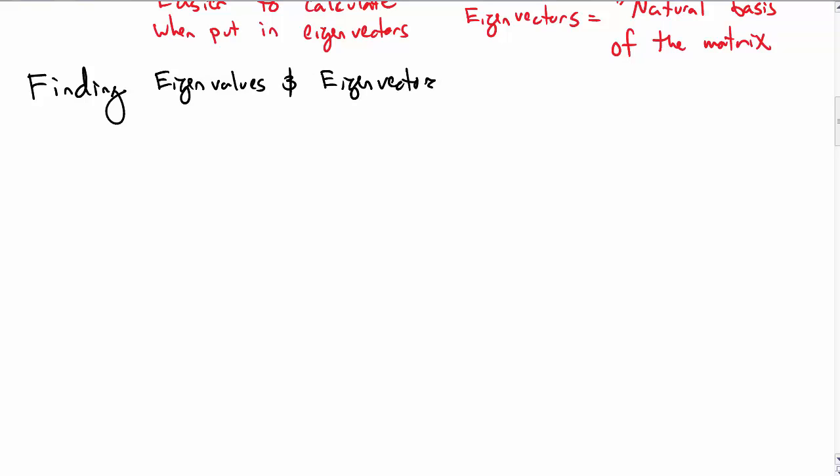How do I find eigenvalues and eigenvectors? In all the examples we had above I just kind of gave them to you. Well the first step is actually we need to find the eigenvalues themselves not the eigenvectors first.